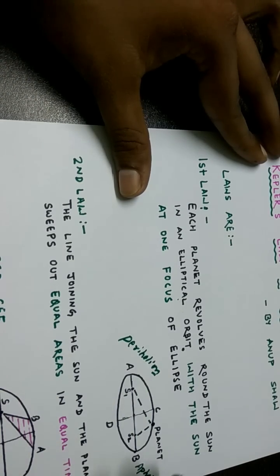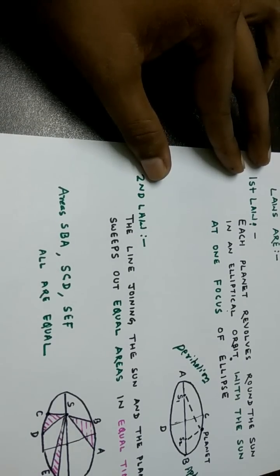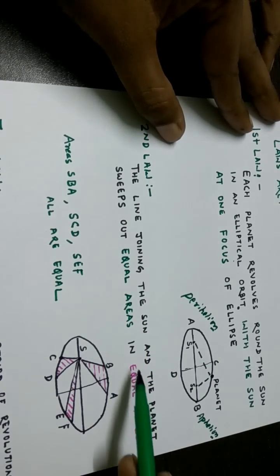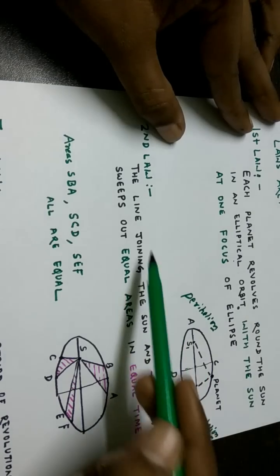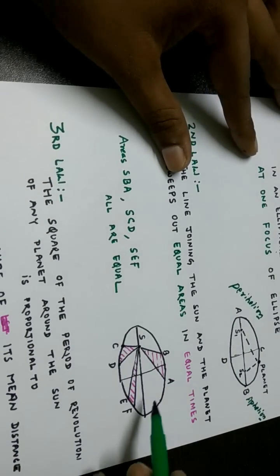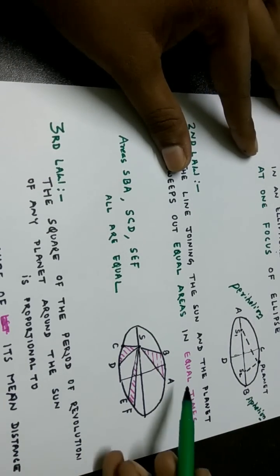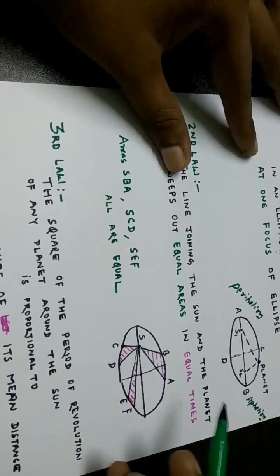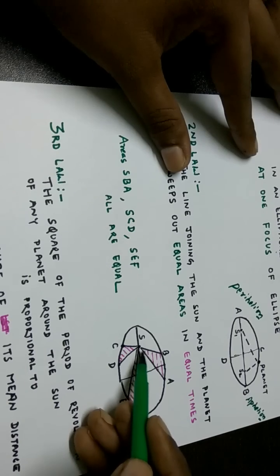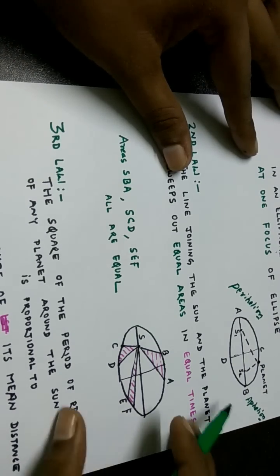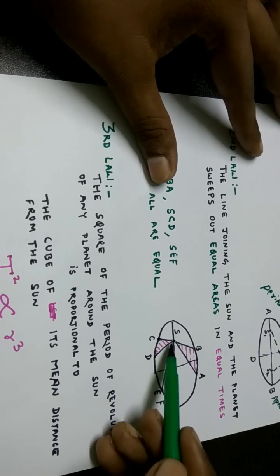So B is the position of aphelion and A is the position of perihelion. The second law says that the line joining the Sun and the planet sweeps out equal areas in equal times. This is an elliptical path, and in a given time T the line sweeps from position SA to position SB, covering area SBA.